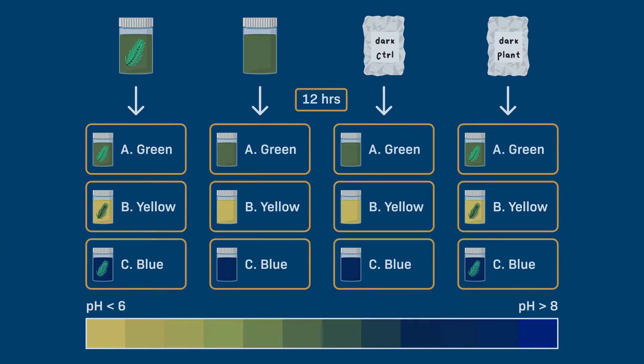So, at the start of our experiment, all the vials are the same green color. Based on what we reviewed about the relationship between photosynthesis, respiration, carbon dioxide, pH, and BTB, I'll give you a minute to make some predictions about what the vials will look like at the end of the experiment. What do you think?